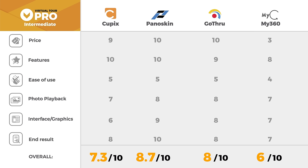So overall, in the intermediate category, Panoskin is the winner. You can do a lot with it and it also happens to be the cheapest of all four options. With that said, I think all four of them are good softwares and you can use all of them professionally and start earning money with your tours — not just small businesses, but medium and even large size businesses.